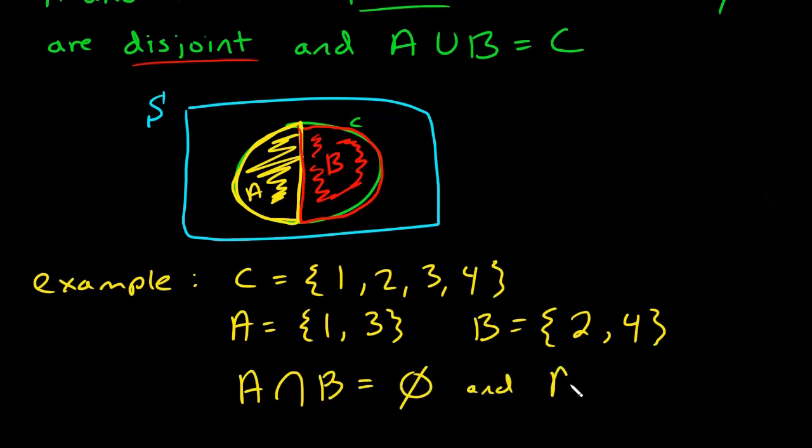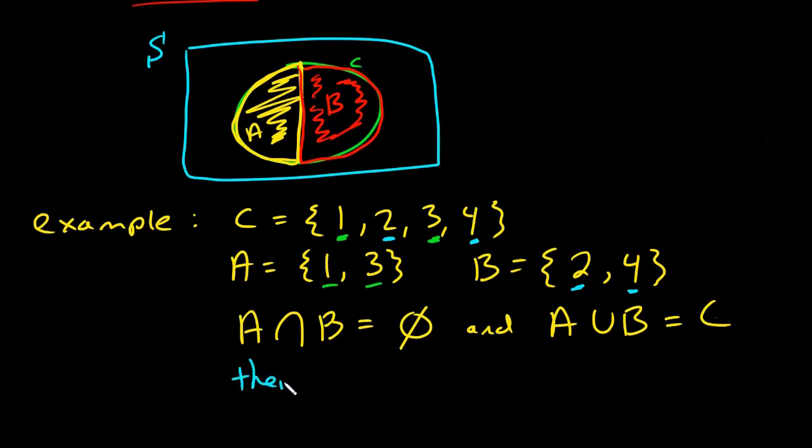So the union of A and B is C, because we have 1 and 3, and then we have 2 and 4. So we have every element of this event C when we do the union, so that's C there. So because of those two things, therefore, A and B are a partition of C.